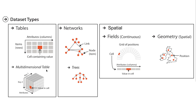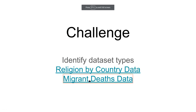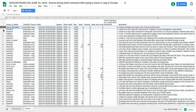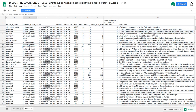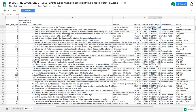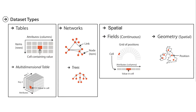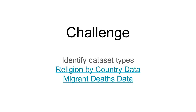This dataset I would say is a multidimensional table. Now let's look at the migrant deaths data. In this dataset, each row represents an individual event – not really an aggregation. It's an event that happened at a point in time, at a point in space, one particular point on the globe. This dataset could be considered tabular data, where each row represents a single item. It also has a spatial aspect, with geographic points corresponding to each row of the table.